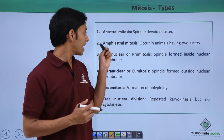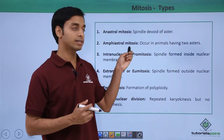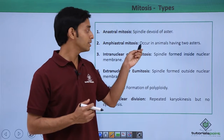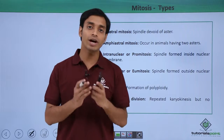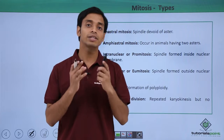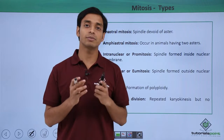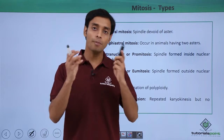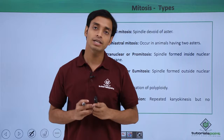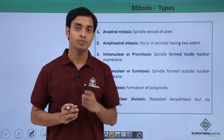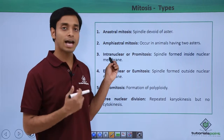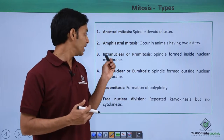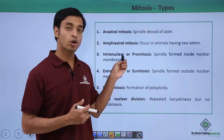The second type is known as amphiastral mitosis. This happens mostly in animals, which have two asters, and these two asters are present at the opposite poles of the cells. The third type of mitosis is intranuclear or pro-mitosis.